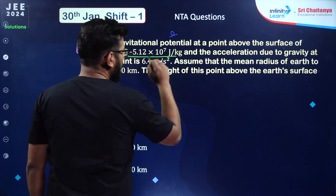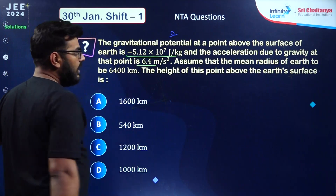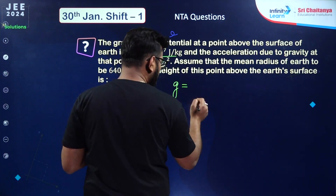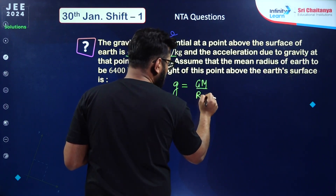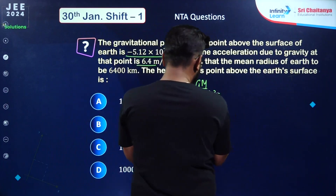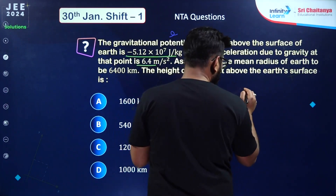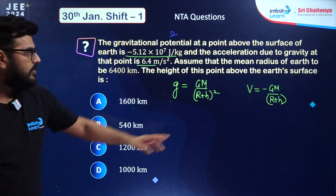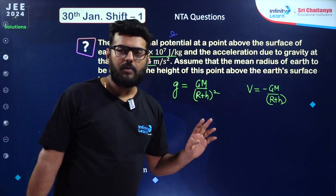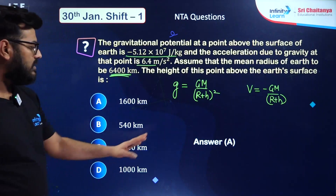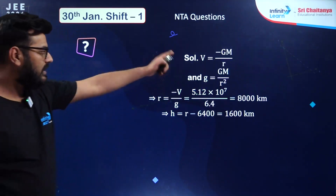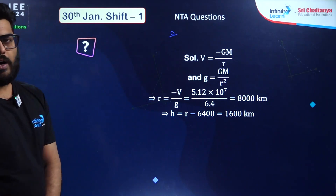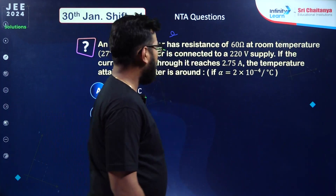A gravitation question: gravitational potential at a point above earth's surface and acceleration due to gravity at that point are given. Acceleration due to gravity at height h is GM/(R+h)², and gravitational potential is -GM/(R+h). Both values are given. Dividing them gives (R+h), then subtract R to get h. Based on the calculations, the correct answer is option number A — 600 kilometer is the correct answer.